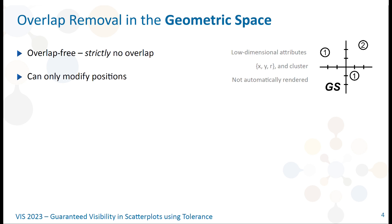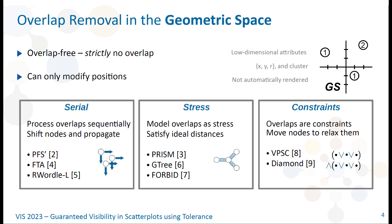We distinguish two kinds of overlap removal algorithms. The first ones are in the geometric space. They only manipulate the node positions and sizes and must strictly remove the overlaps. For example, the serial algorithms detect and process the overlaps sequentially, propagating the node movements. The stress-based algorithms model the task as a distance distribution optimization problem, moving the nodes with attraction and repulsion forces to match ideal distances. Finally, the constraints-based algorithms model the overlaps as a set of constraints that are relaxed with dedicated algorithms.